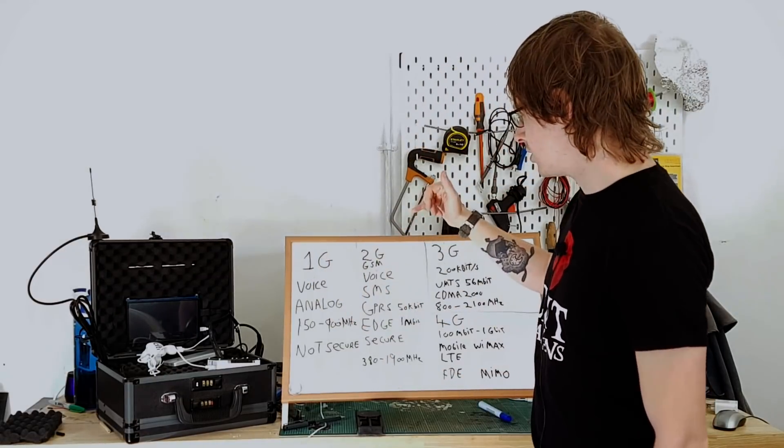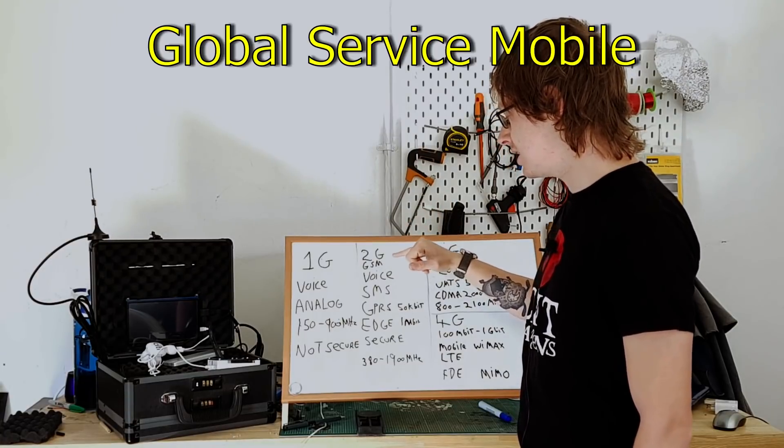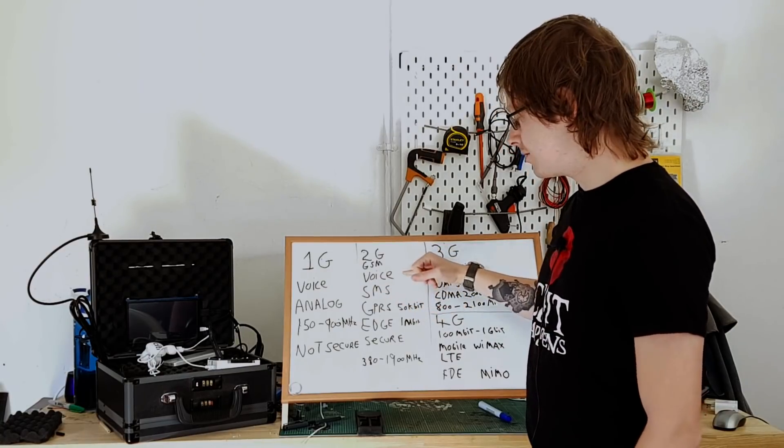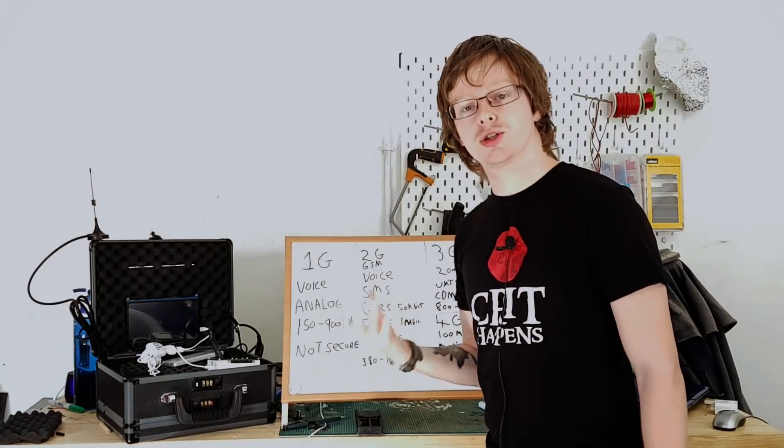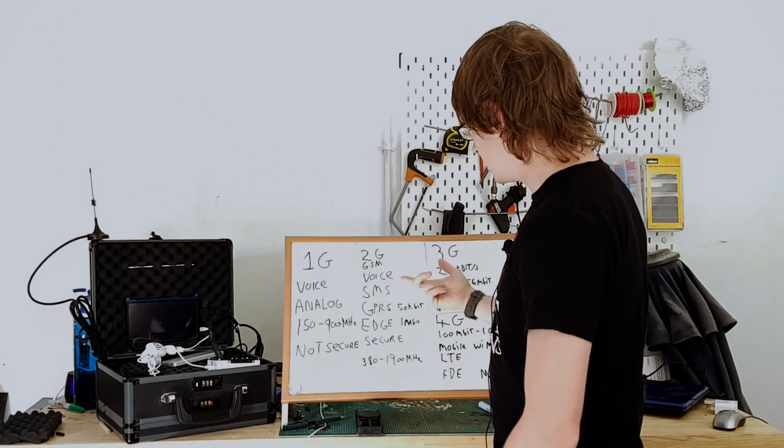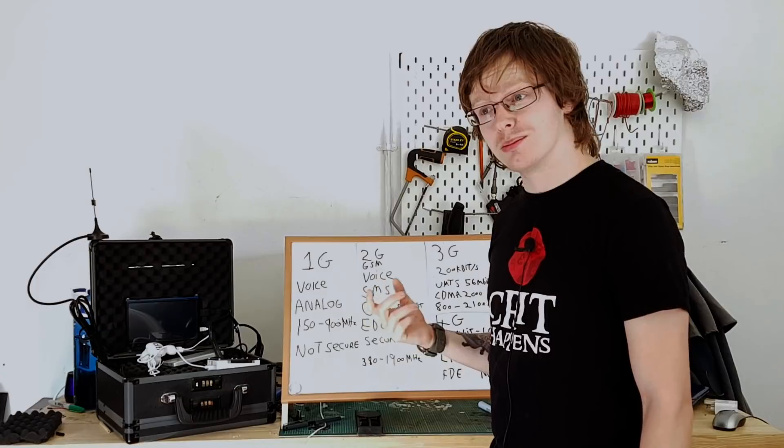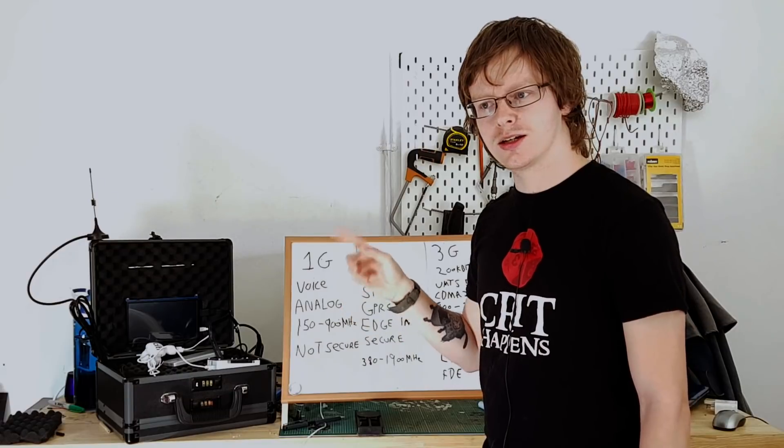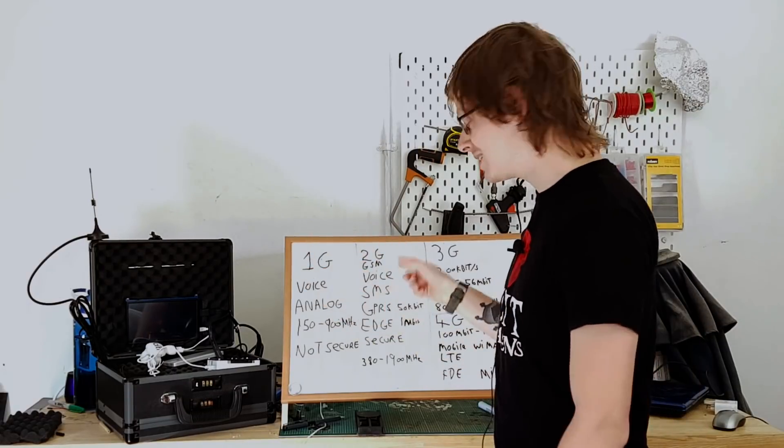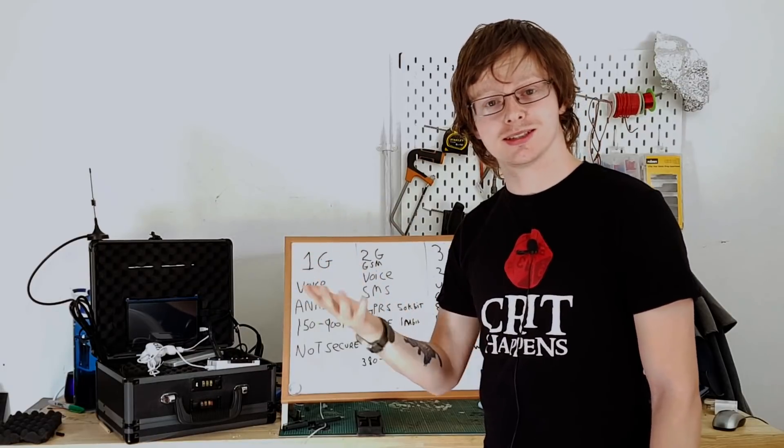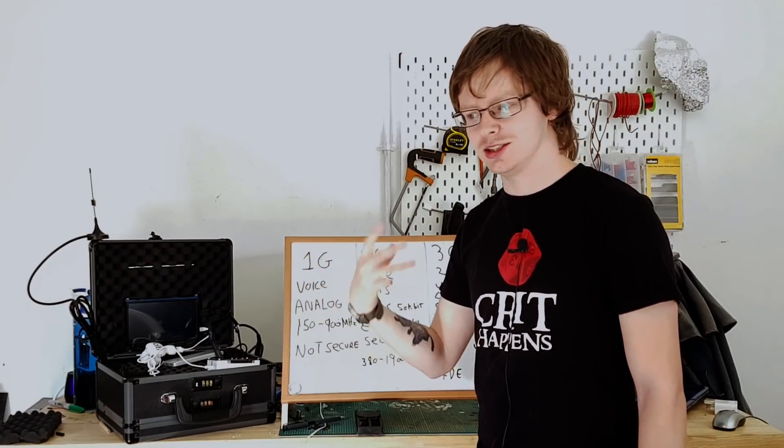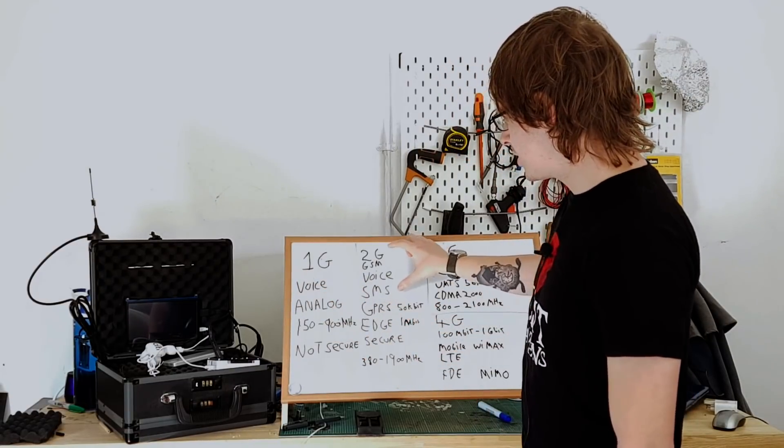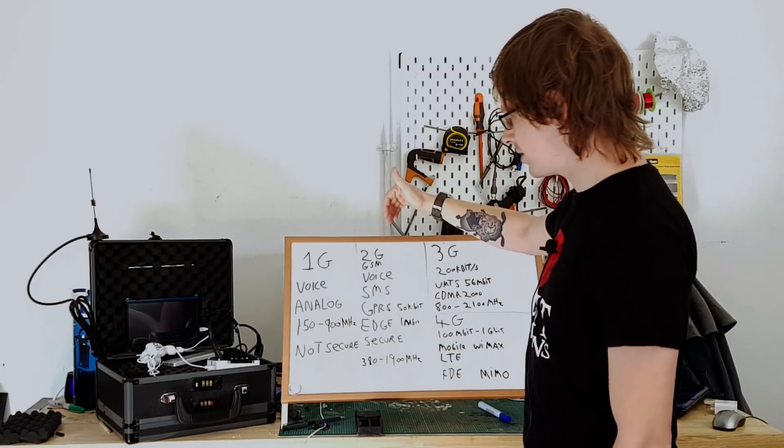Moving on a bit, we got 2G, second generation. A lot of people also knew this as GSM, general service mobile. It had voice, it was also the first one to have SMS, short messaging services, texts essentially. Also a fun fact, if you ever remember the old ringtone that sort of came as default, that was did it did it did it. That is SMS in Morse code, and that's what that original text message receive tone used to be.